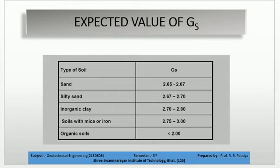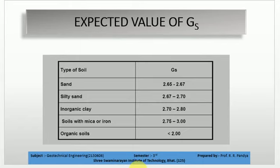Here are the expected values of specific gravity for different types of soil: for sand it lies between 2.65 to 2.67; for silty sand between 2.67 to 2.70; for inorganic clay between 2.70 to 2.80; for soil with mica or iron content between 2.75 to 3.0; and for organic soil it will be greater than 2. These are the expected values of specific gravity.